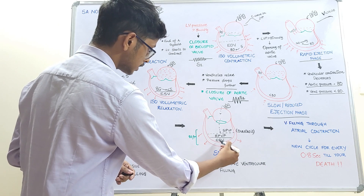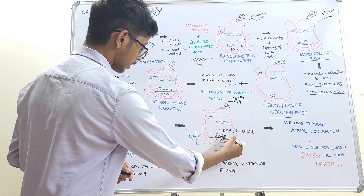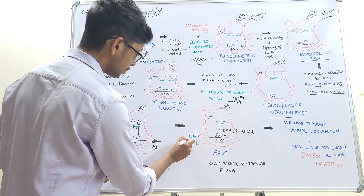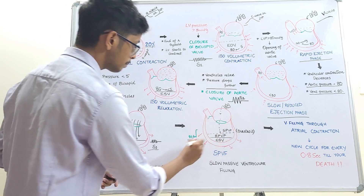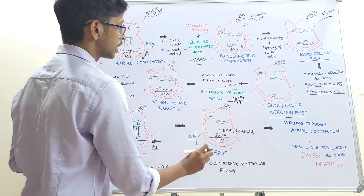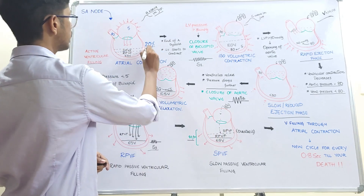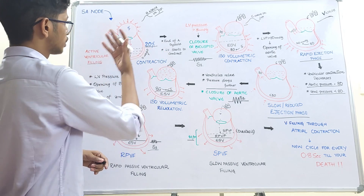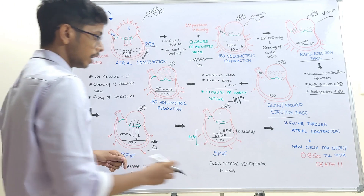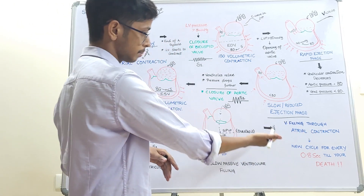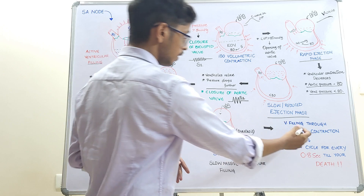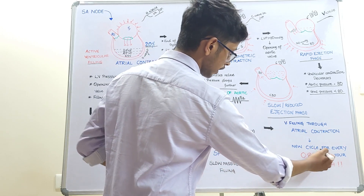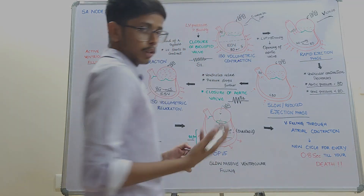The end systolic volume, rapid passive ventricular filling, and slow passive ventricular filling together constitute 80% of ventricular filling, or 80% of the end diastolic volume. The remaining 20% is due to active ventricular filling during the atrial contraction phase. Finally, the cycle returns to its beginning — ventricular filling through atrial contraction — and a new cycle begins every 0.8 seconds.